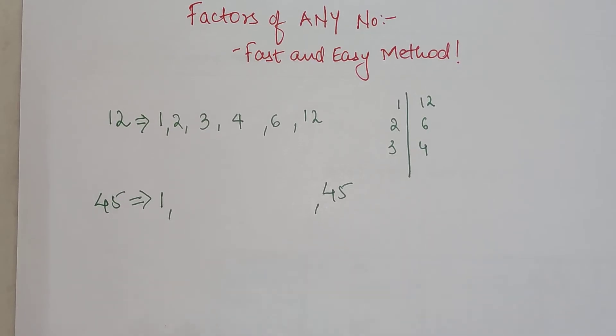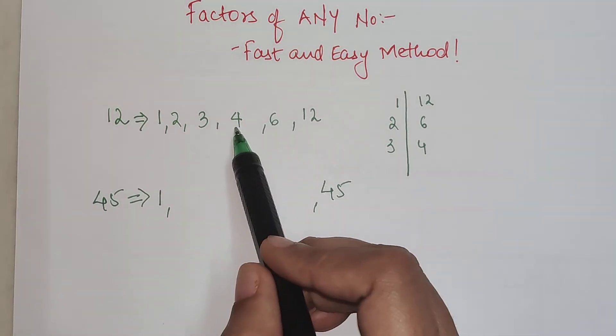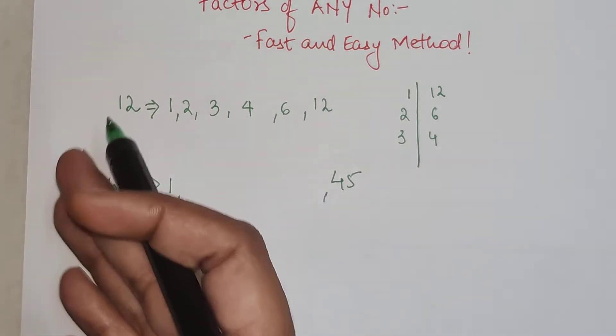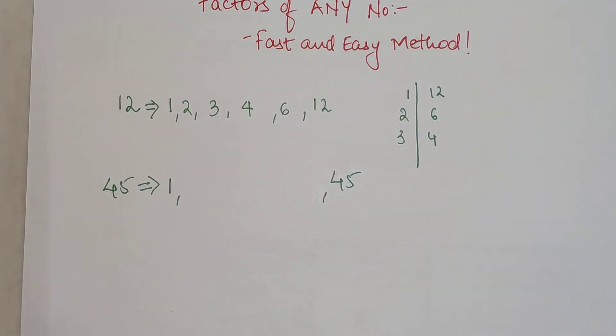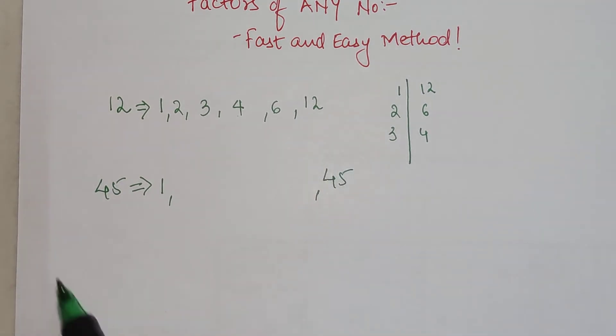Please pay attention to the method of me writing these factors. This is very easy and it will help you realize where to stop doing the factors. Here we got 3 and 4, and we know that after 4 we get 5, which doesn't divide 12, and then after that we get 6 which is also taken care of.